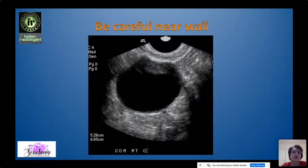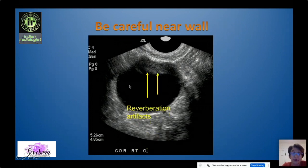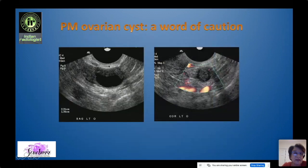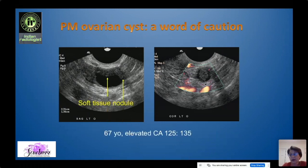Be very careful before calling something a simple cyst, especially in older women, because reverberation artifact near the near wall can hide a nodule. In one case, what appeared to be reverberation was actually a mural nodule in the corner of the cyst — and this turned out to be a small ovarian cancer in a patient with an elevated CA-125. We really have to be careful before we call something a simple cyst.